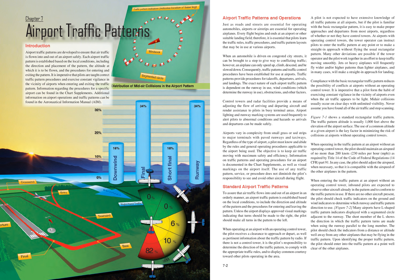Unless the airport displays approved visual markings indicating that turns should be made to the right, the pilot should make all turns in the pattern to the left. When operating at an airport with an operating control tower, the pilot receives a clearance to approach or depart, as well as pertinent information about the traffic pattern by radio. If there is not a control tower, it is the pilot's responsibility to determine the direction of the traffic pattern, to comply with the appropriate traffic rules, and to display common courtesy toward other pilots operating in the area.